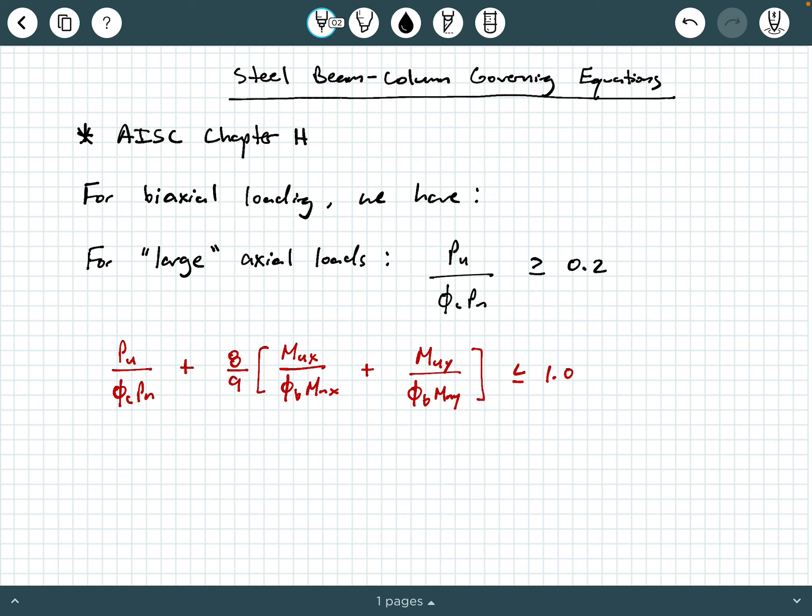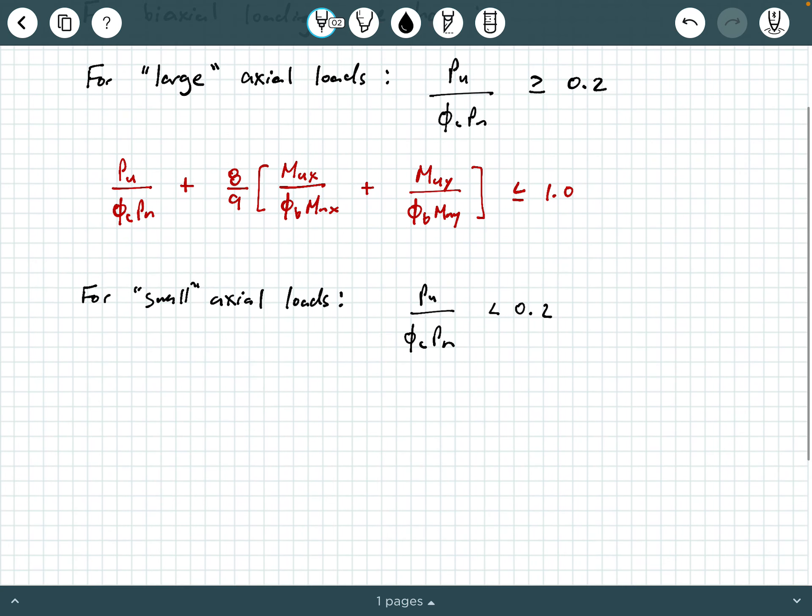Now what happens if PU over φcPN is less than 0.2? Well, we can say for small axial loads where we have a PU over φcPN less than 0.2, we would use the following interaction equation. PU over 2φcPN plus MUX over φB MNX plus MUY over φB MNY must be less than or equal to 1.0. So again, for the other case where PU over φcPN is less than 0.2, we use this second interaction equation.